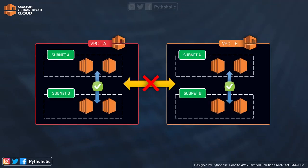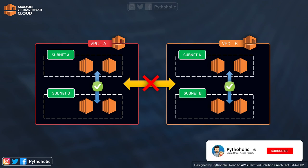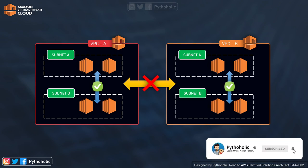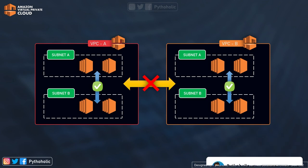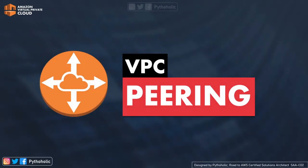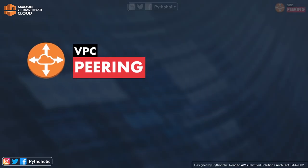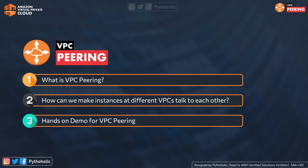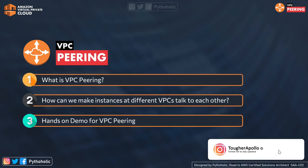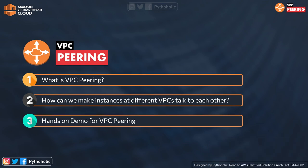So far we have been working with VPCs and we are able to work with instances, but there is a problem: the users of VPC A are not able to access the instances and resources from VPC B. Do we have a solution for this? Yes, let's talk about VPC peering. In today's episode we will be talking about what is VPC peering and how we can make instances at different VPCs talk to each other, and we'll surely do a hands-on demo for VPC peering.